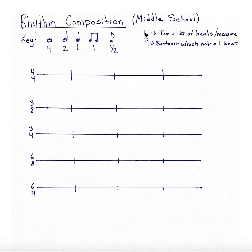So in other words, if I have a 4 on the top, like I do in this first line here, that tells me that each of these measures — 1, 2, 3, 4 — each of those 4 measures is going to have 4 beats in it. Now the bottom number, as we said, tells you which note equals 1 beat.